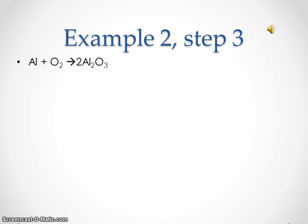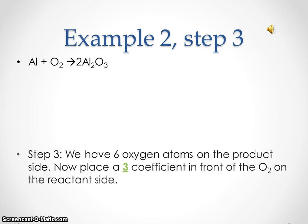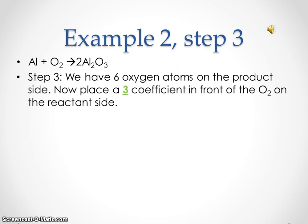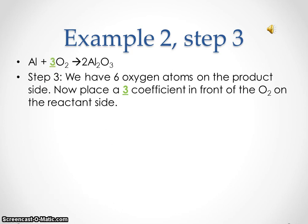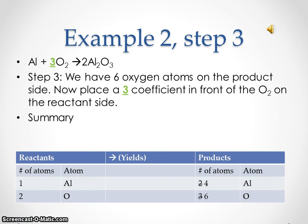Example two, step three. We added a two coefficient on the product side. In step three, we have six oxygen atoms on the product side. Place a three coefficient in front of the O₂ on the reactant side. On the reactant side, we now have one aluminum atom and six oxygen atoms.